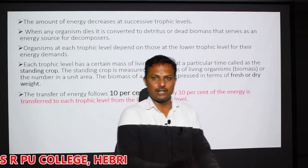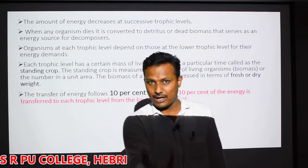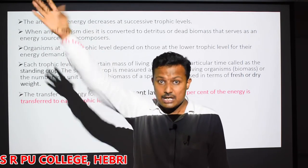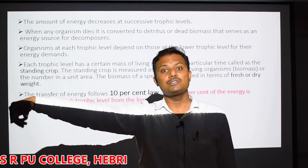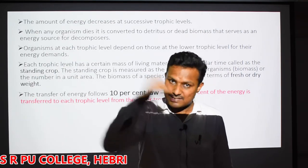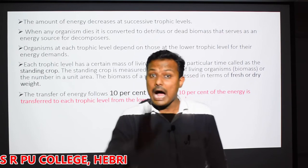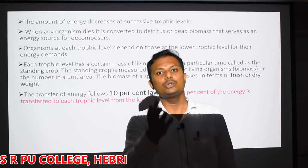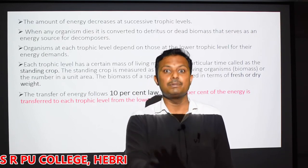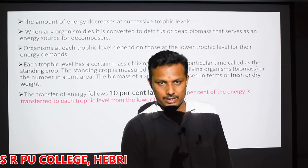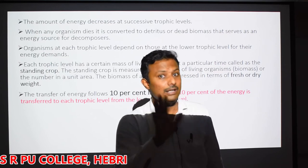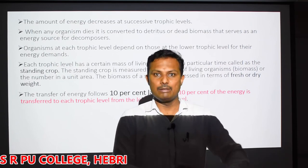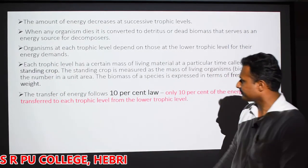Where does the other 90% of energy go? If any organism at one level has 100% energy, only 10% goes to the next level. Of the remaining 90%, a part of the energy is utilized by the same organism for its own metabolic activities, and the other amount of energy is lost to the nature in the form of heat. No system is completely efficient - some amount of energy will always be lost. This applies to ecosystems as well, based on the laws of thermodynamics.